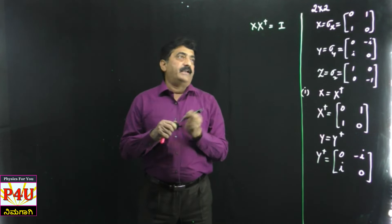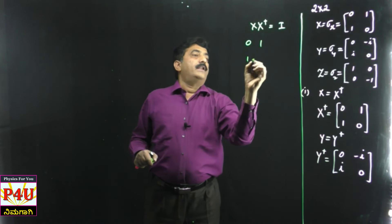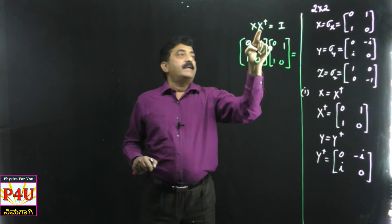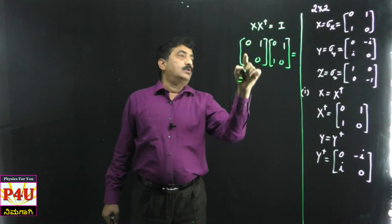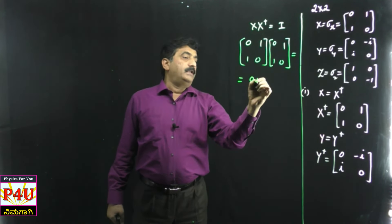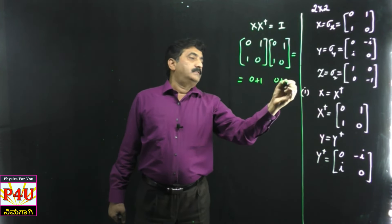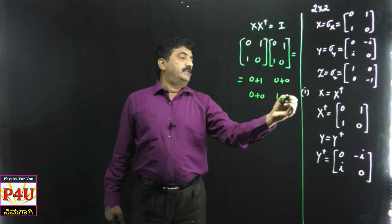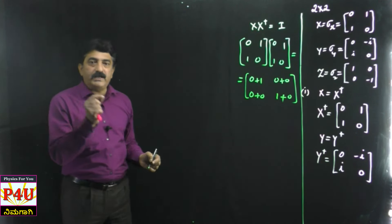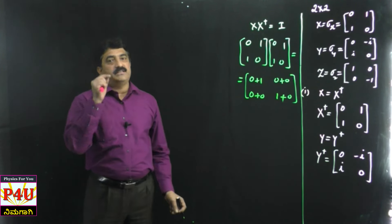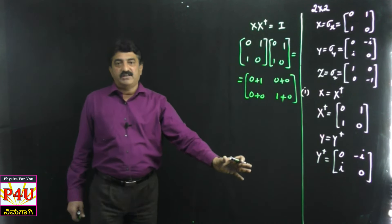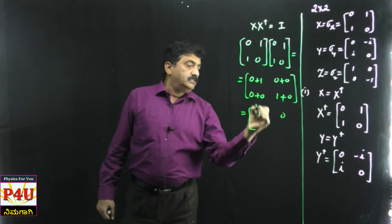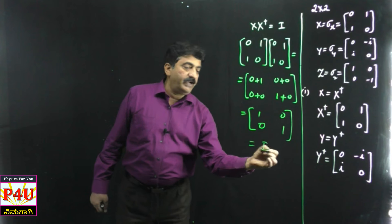Let us try only X·X†. X is [0, 1; 1, 0] and X† is also [0, 1; 1, 0]. Multiplying: element (1,1) = 0×0 + 1×1 = 1; element (1,2) = 0×1 + 1×0 = 0; element (2,1) = 1×0 + 0×1 = 0; element (2,2) = 1×1 + 0×0 = 1. Finally it is [1, 0; 0, 1] - that is the identity matrix.